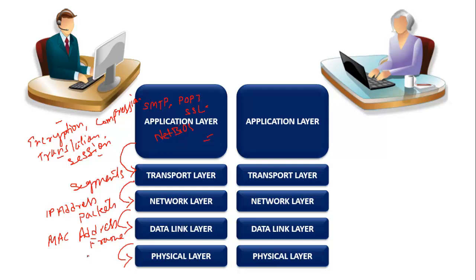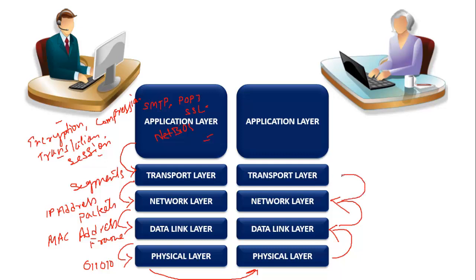The frames are forwarded to the physical layer, which converts the data into binary bits — 0s and 1s — and then forwards it to the receiver side. On the receiver side, everything happens in reverse: the physical layer forwards to the data link layer, frames get converted to packets at the network layer, then forwarded to the transport layer and up to the application layer, where the user can easily read the data. So the TCP/IP model does the same job as the OSI model — the only difference is the number of layers: seven in OSI, five in TCP/IP. But the functions and the way data travels are absolutely the same.